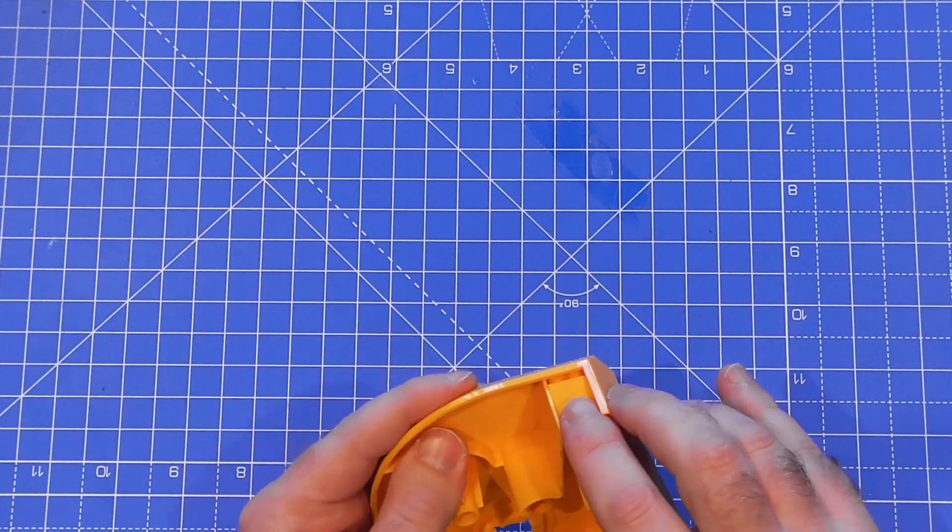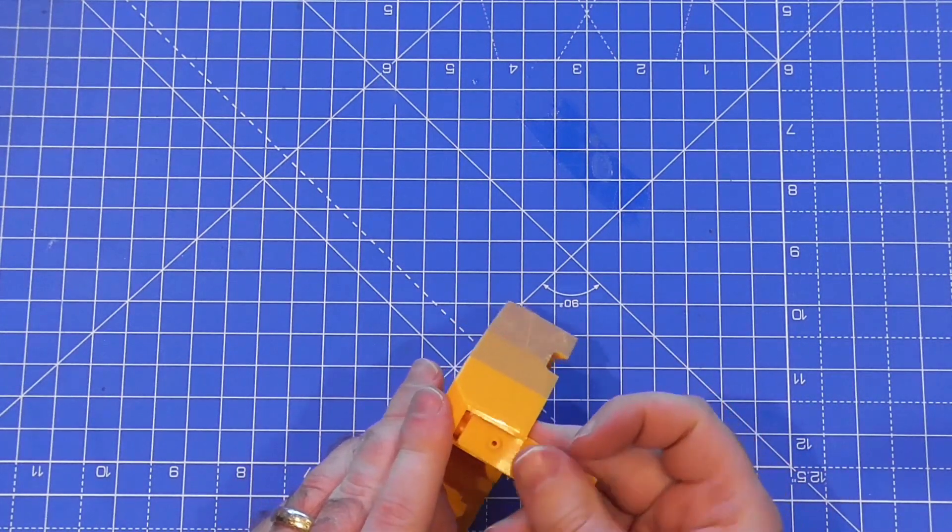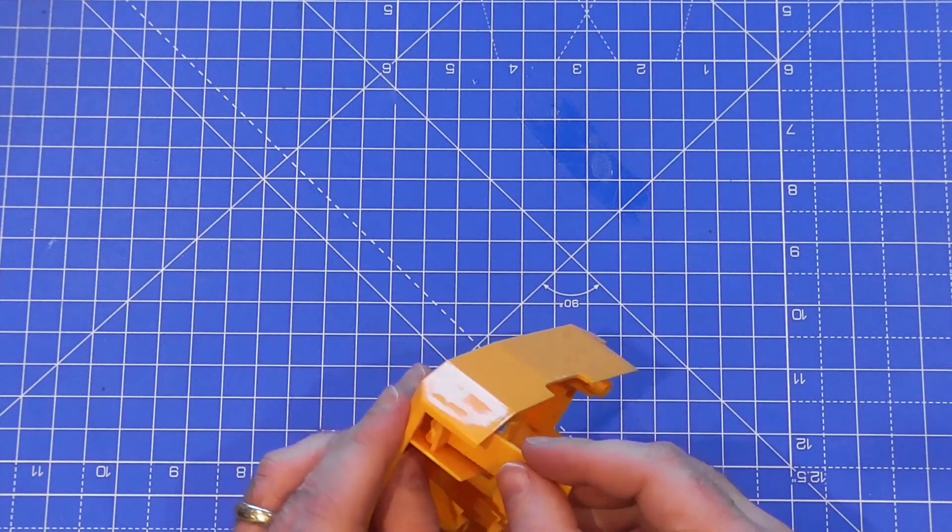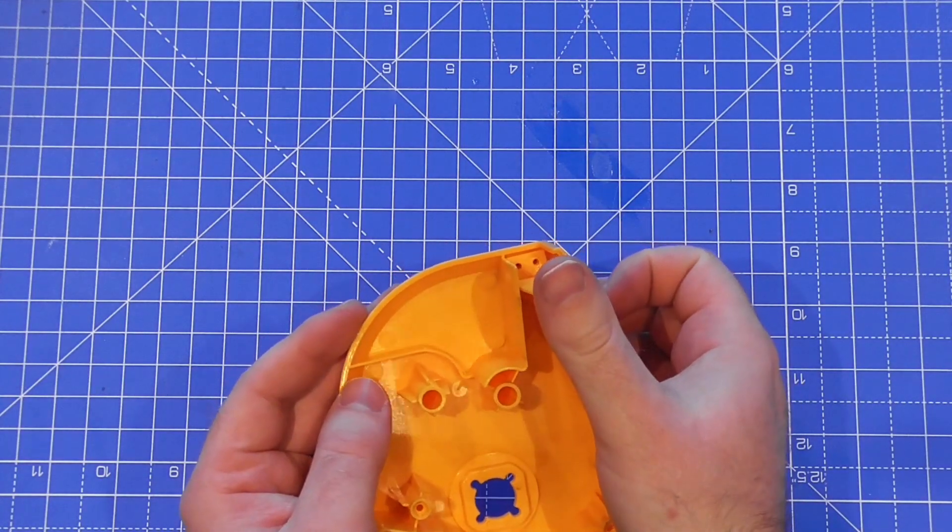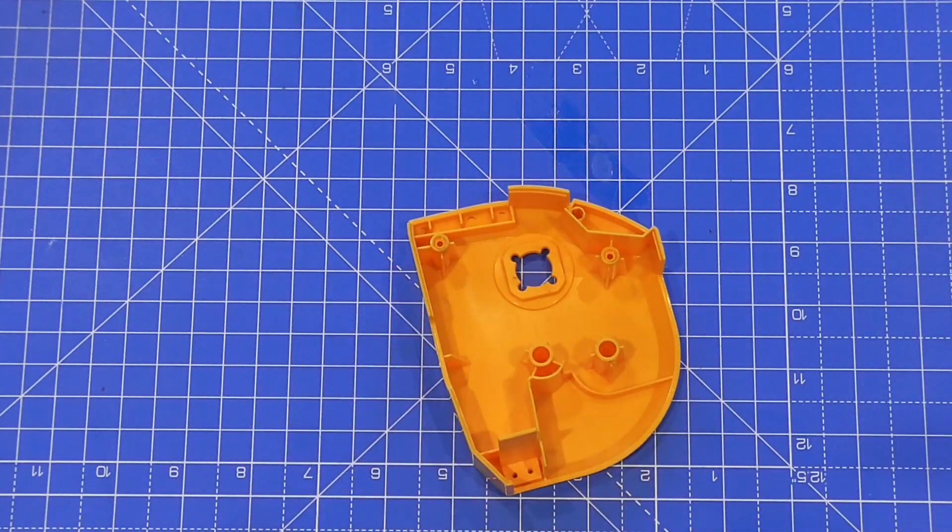What you need to do is just line up these parts here, which I'm struggling to do. I wonder why they aren't going in. That's because we've got the wrong way around. There we go, so it lines up there so it's flush, and then we just screw these parts down.